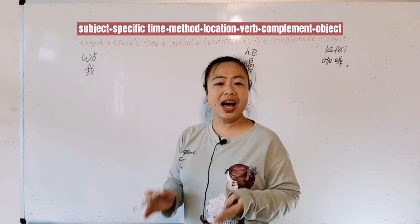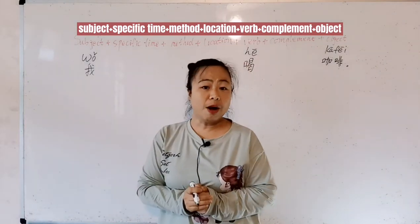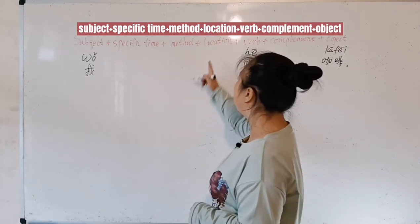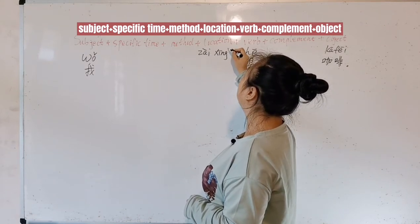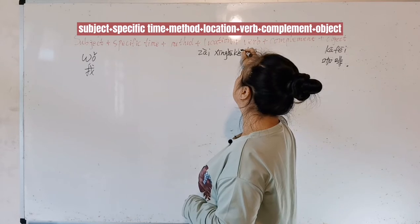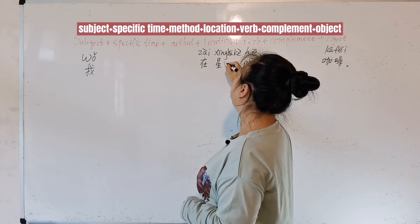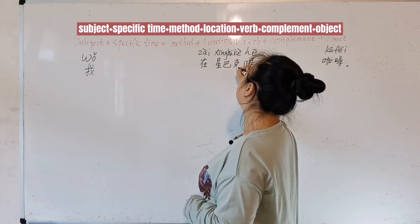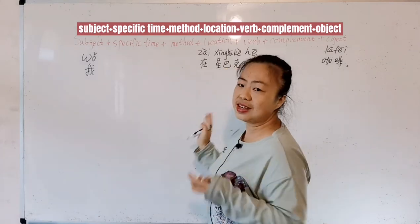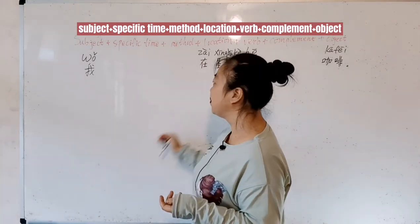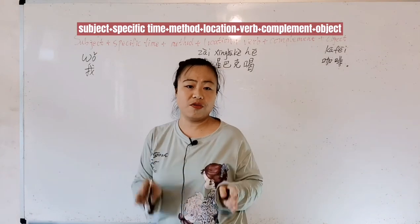How about 'I drink coffee in Starbucks'? Where do we put Starbucks in this sentence? Starbucks is a location, so it should go in the location slot. Wǒ, zài, xīnbākè, hē, kāfēi. Zài means 'at'. Xīnbākè is Starbucks — we literally transliterate it from the pronunciation. So wǒ zài xīnbākè hē kāfēi means 'I drink coffee in Starbucks'.